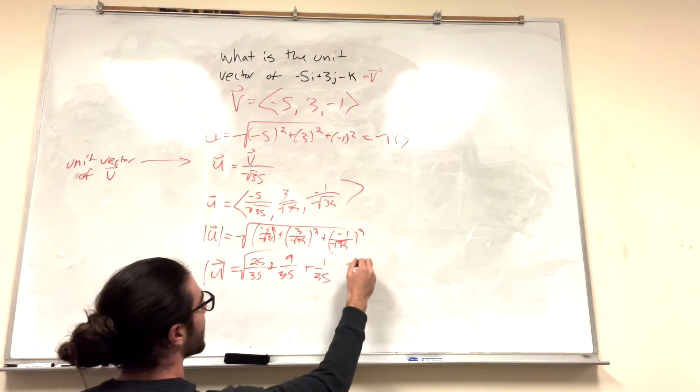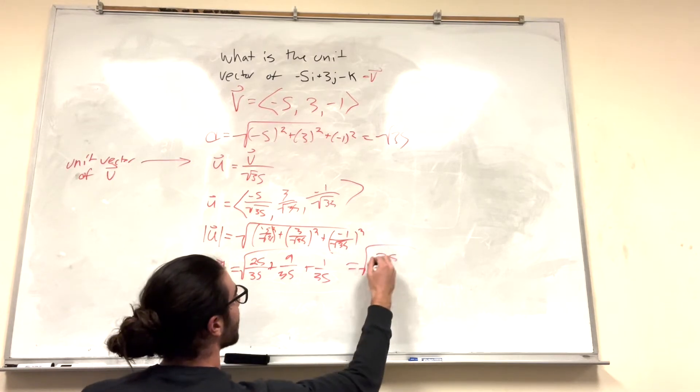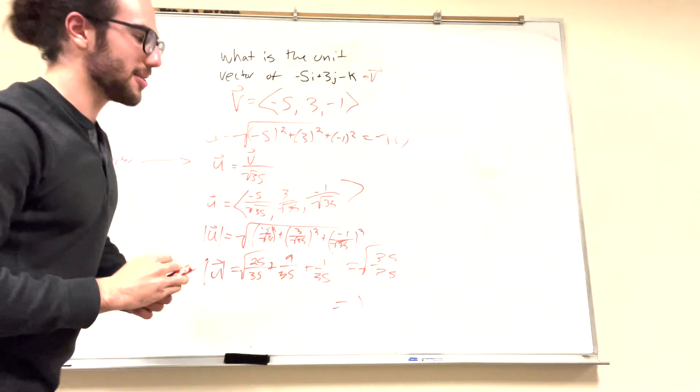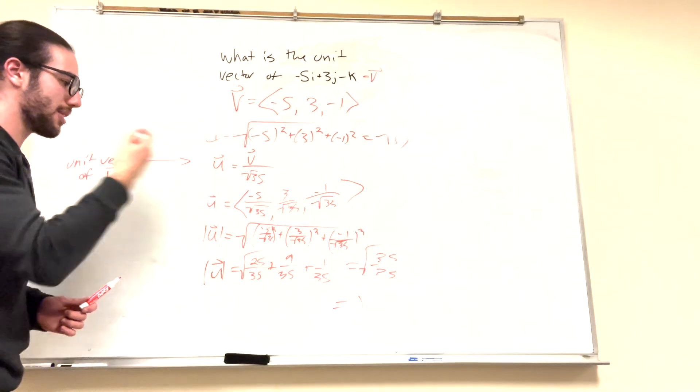What we're going to get is 25 over 35, plus 9 over 35, plus 1 over 35. But, what you'll notice is the square root of 35 over 35, which is equal to 1. Therefore, the magnitude, the distance of our unit vector is equal to 1, and we just proved it here.